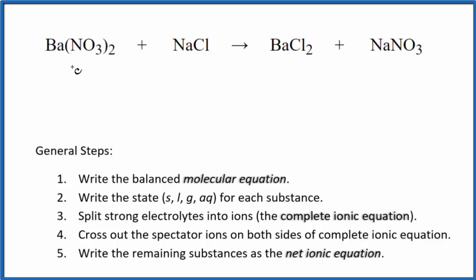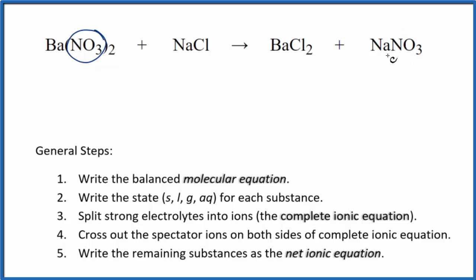First off, if we look at the equation, when we do net ionic equations we probably should balance the equation. I can see that I have these two nitrate ions here and just one here, so I'm going to put a 2 in front of the NaNO₃. Now I have two sodium atoms, so I'm going to put a 2 over here.